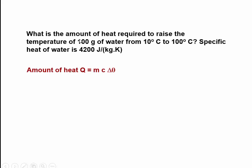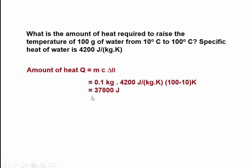Our mass is 100 grams. You need to write that in kilograms. The specific heat of water is 4,200 joules per kilogram per Kelvin. And the change in temperature is 100 degrees Celsius minus 10 degrees Celsius, that is 90 degrees Celsius. So we put those values in: mass is 0.1 kilogram, since 100 grams is 0.1 kilogram.